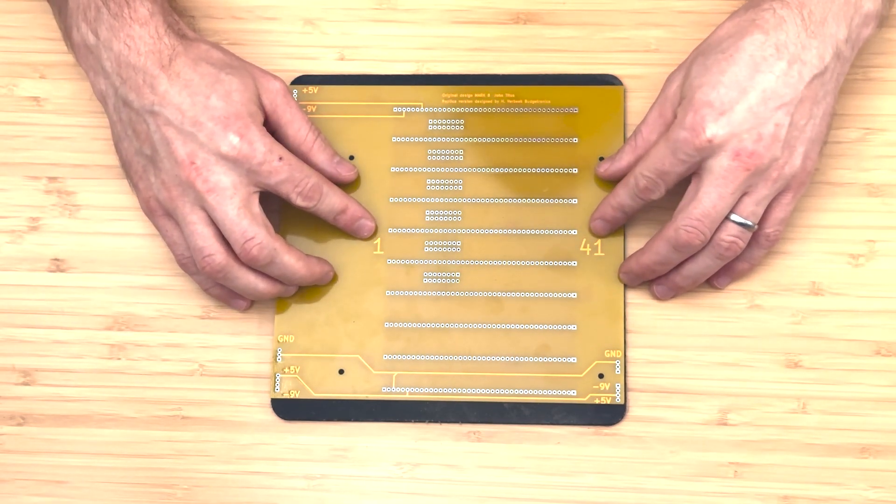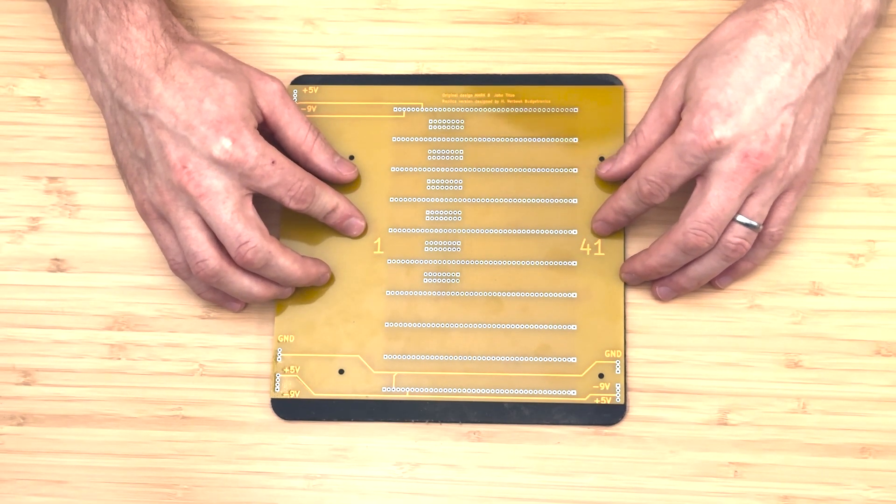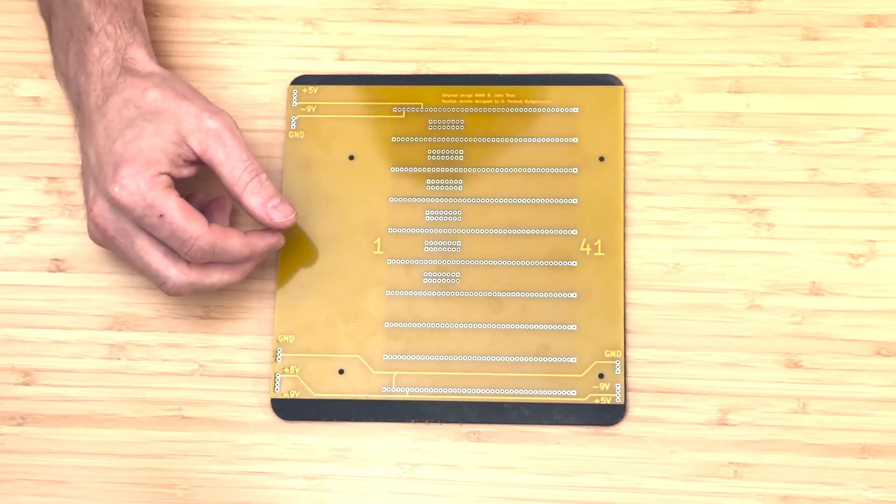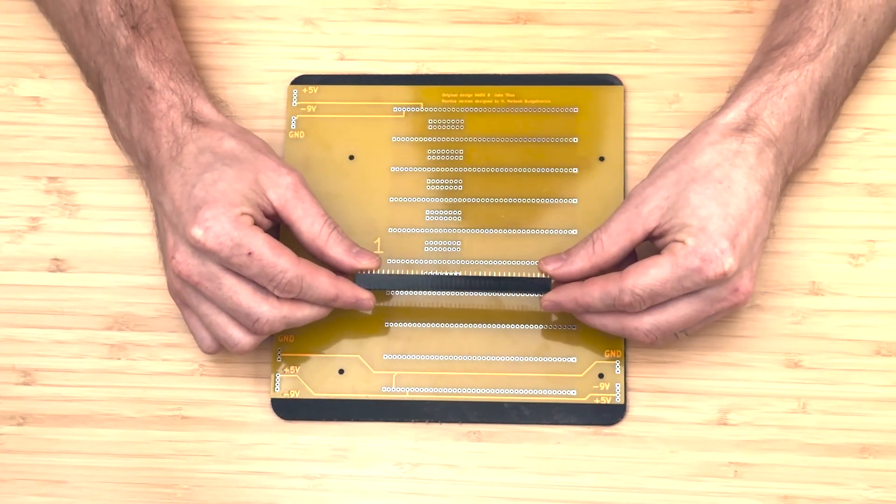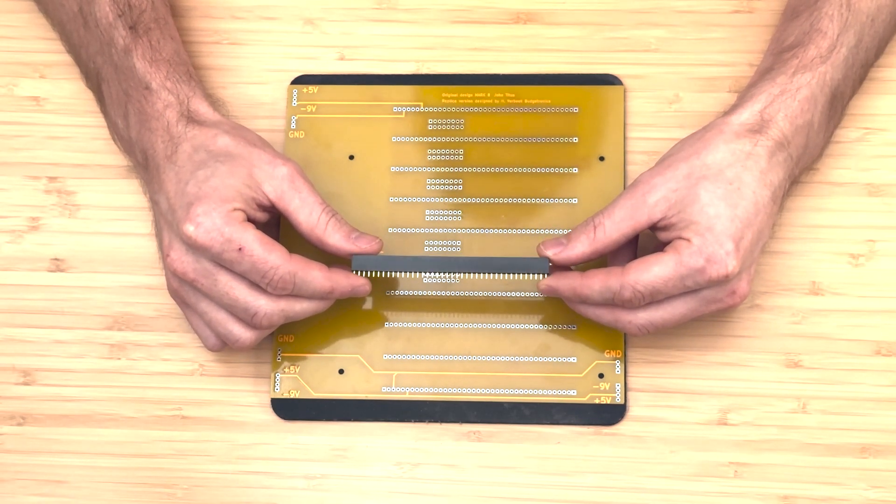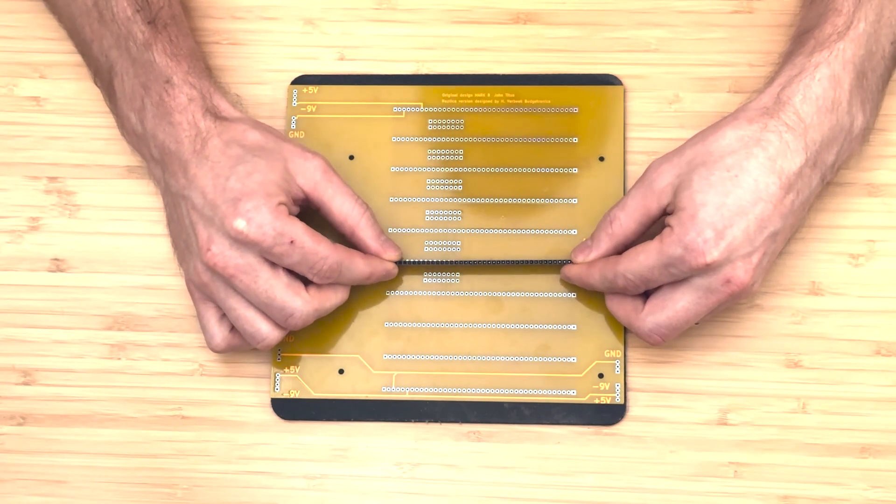The bus on this board comprises 10 slots, each containing 41 lines. Unfortunately, finding a connector of 41 positions proved to be a challenge, but I managed to secure one with 40 positions.